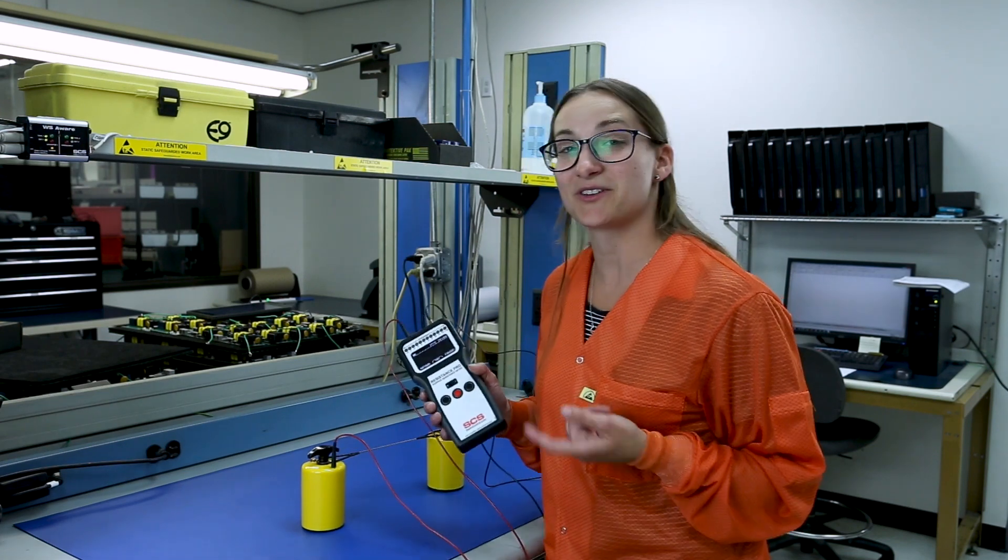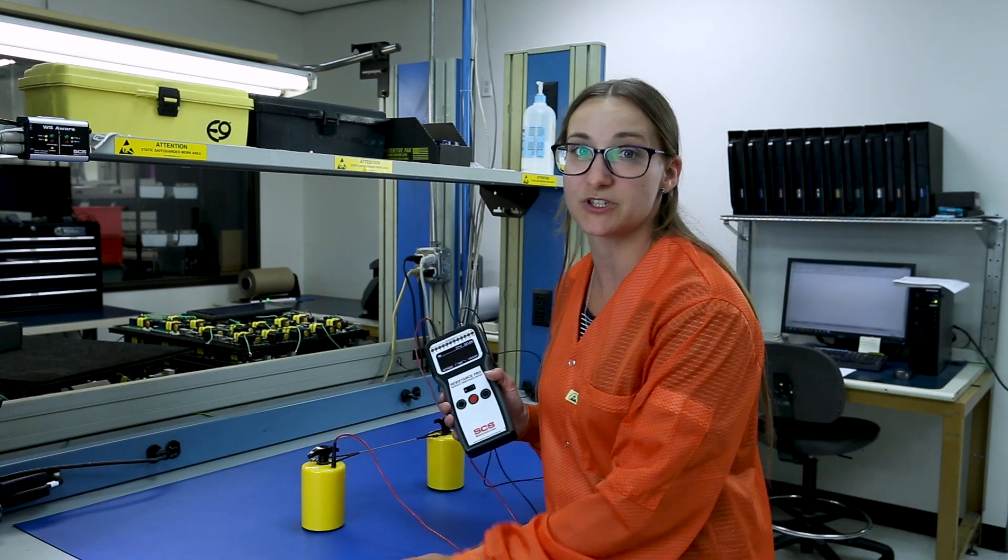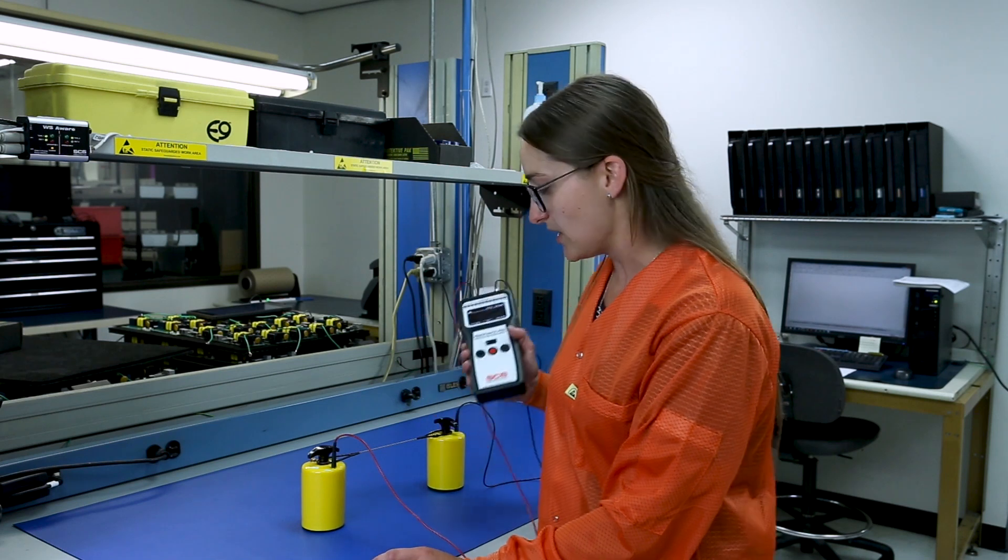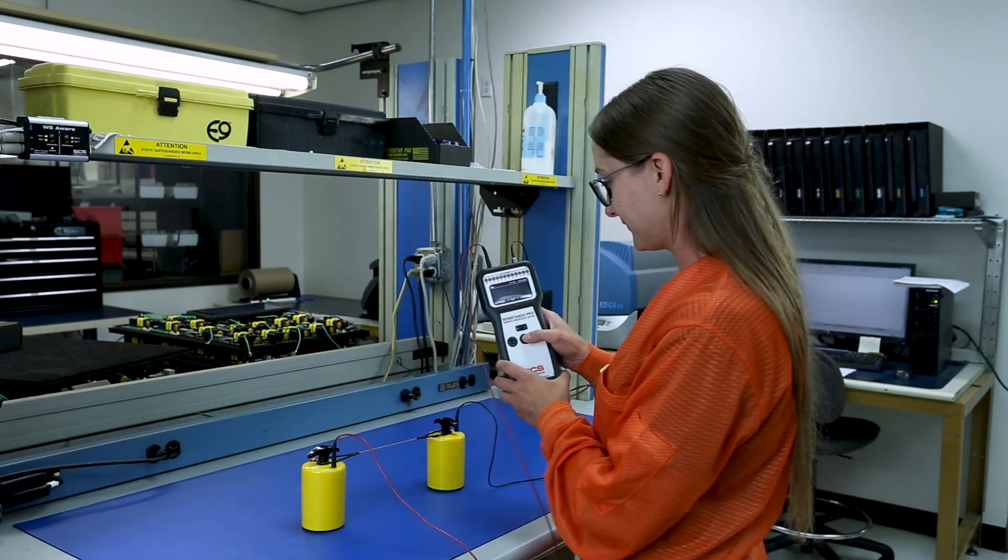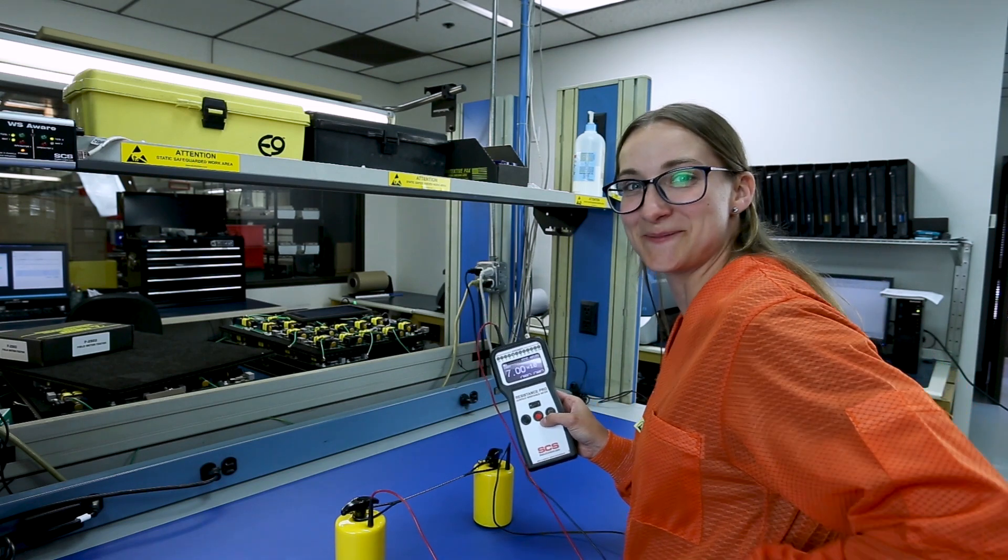We use the resistance probe to test our mats. This particular mat should test between 10 to the fifth to 10 to the ninth. So let's see what we get here. 10 to the sixth. That is definitely in spec.